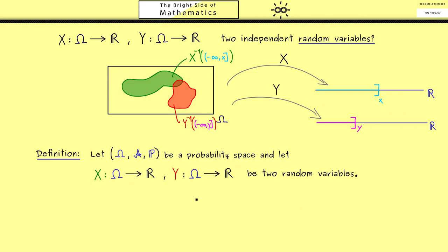Then we say X and Y are independent when suitable pre-images are independent. Indeed, the pre-images we need I have already showed you above. So we take a lowercase x and a lowercase y, and then we look at the pre-images of these half-bounded intervals.